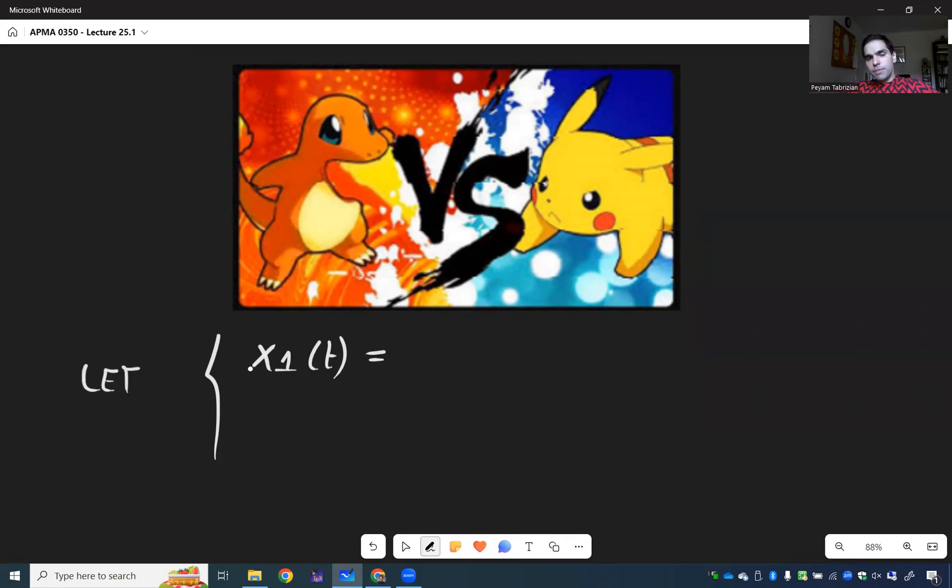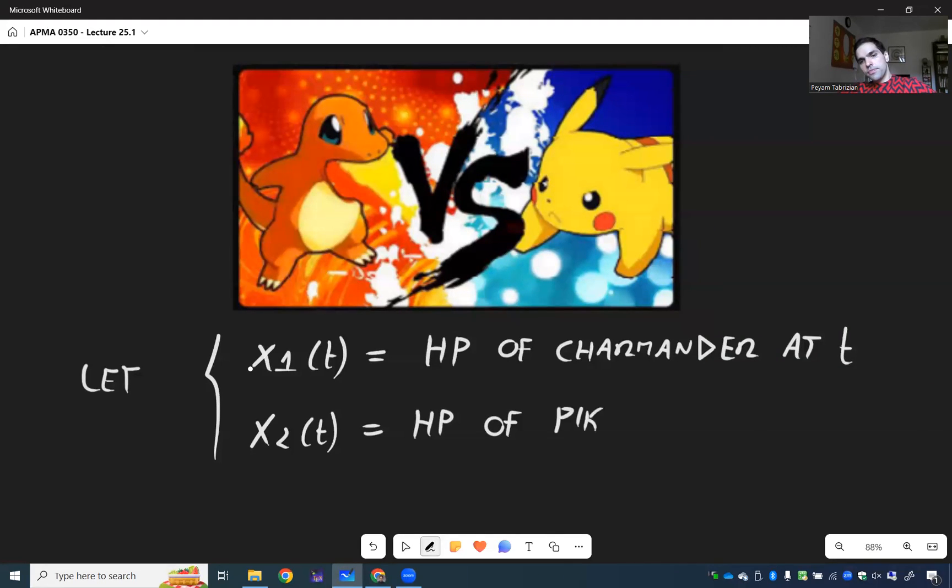And in particular we can model what are called the hit points of Charmander and Pikachu. So let X1 of T be the hit points of Charmander at time T and X2 of T be the hit points of Pikachu at T. Now hit points, what this means is think life. So maybe each Pokemon starts with 100 hit points and it takes damage and once the hit points become zero that's when the Pokemon loses basically.